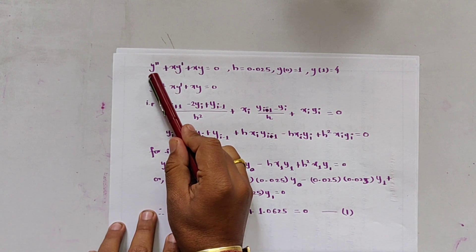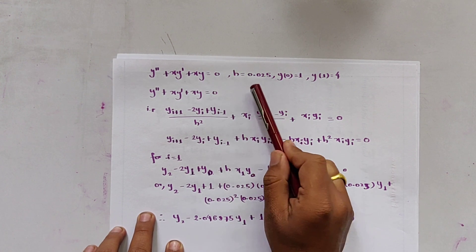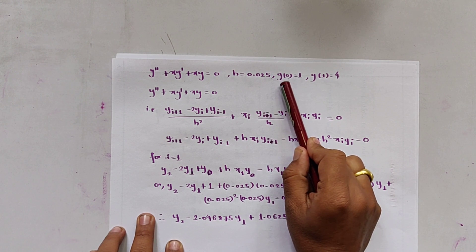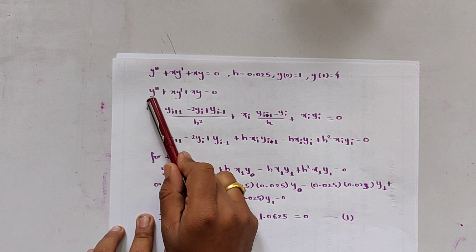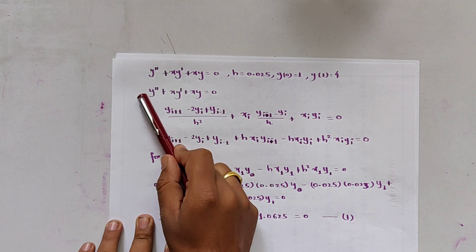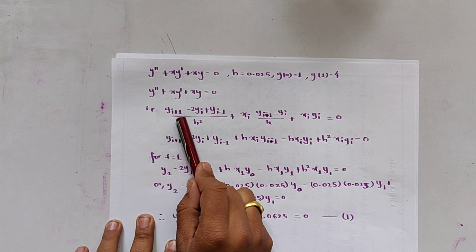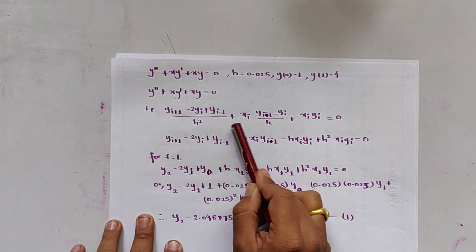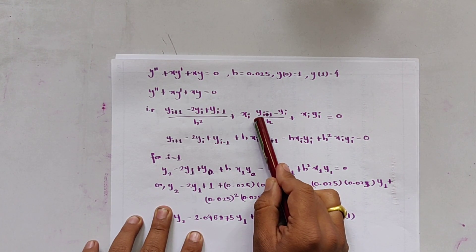Now let us consider another example: y'' + x·y' + x·y = 0, where h = 0.025, y(0) = 1, and y(1) = 4. Using the central difference formula, y'' is approximated as (y_i+1 - 2y_i + y_i-1) / h².